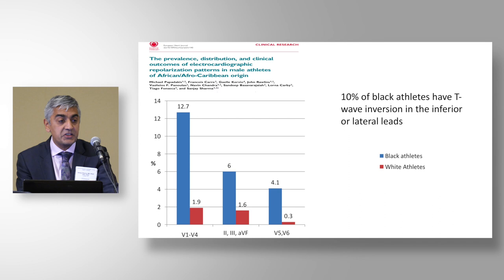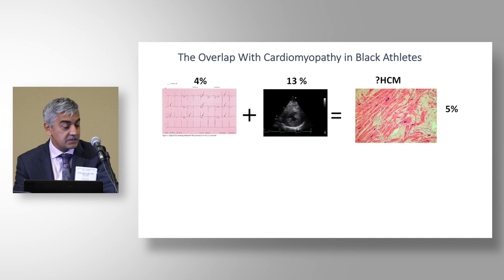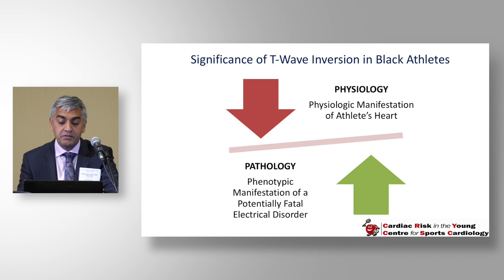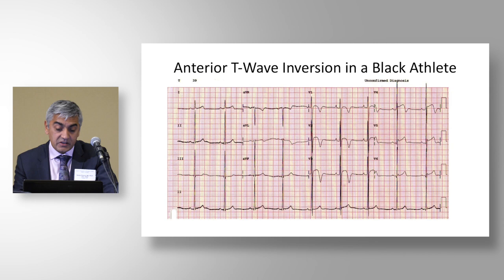Apart from anterior T-wave inversion, around 10% of black athletes have T-wave inversion in the inferior and lateral leads. It's impossible that 10% of all black athletes harbor cardiomyopathy. However, combining inferolateral T-wave inversion with a wall thickness greater than 12mm, 5% of black athletes could be misdiagnosed with hypertrophic cardiomyopathy. With anterior T-wave inversion and an enlarged right ventricular outflow tract, up to 3% could be diagnosed with arrhythmogenic right ventricular cardiomyopathy — tenfold more common than in white athletes.